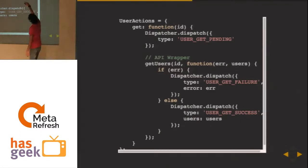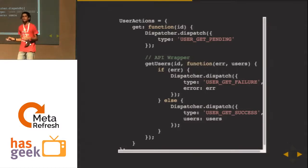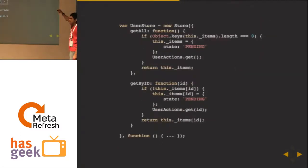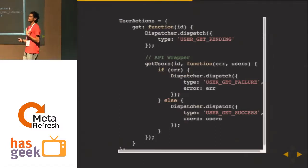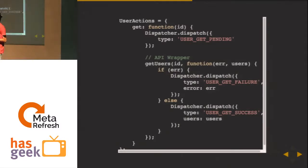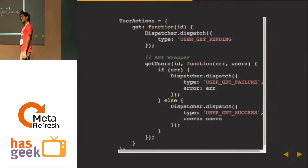Looking at that, you do your traditional Ajax call in the get users thing. At that place, if someone asks the store for data it doesn't have, it fires off user actions dot get. And how is that implemented? User actions dot get would immediately fire an action saying 'user get pending', then does the Ajax call, and might eventually fire a success or a failure.